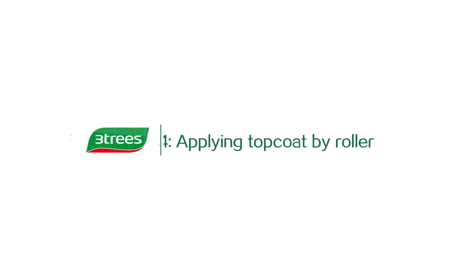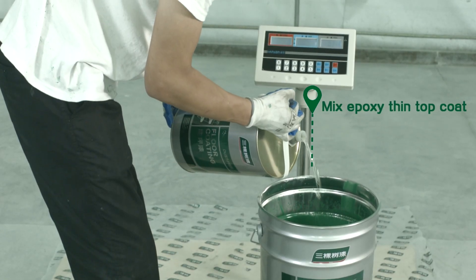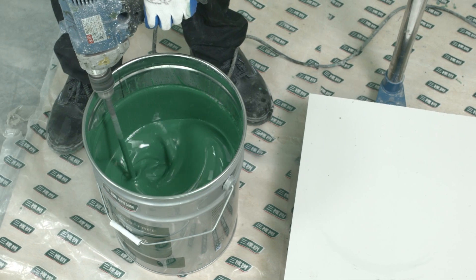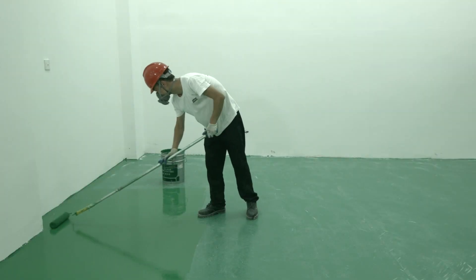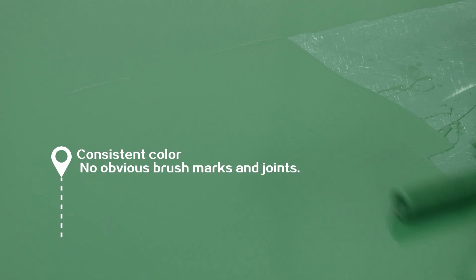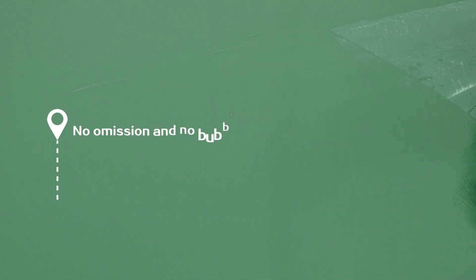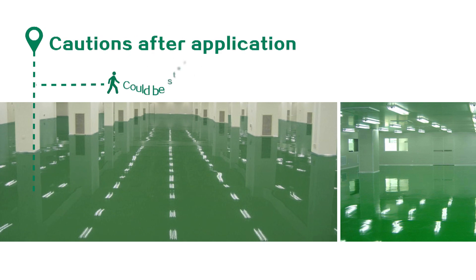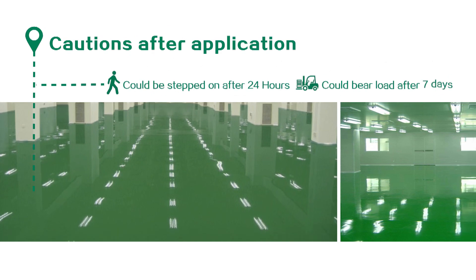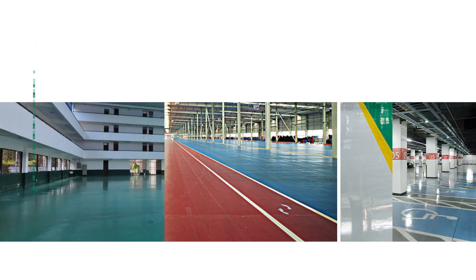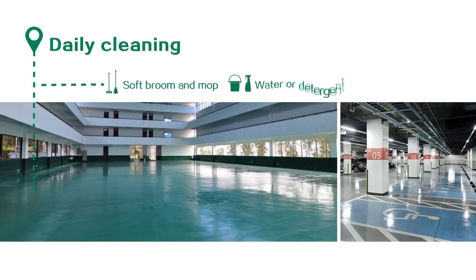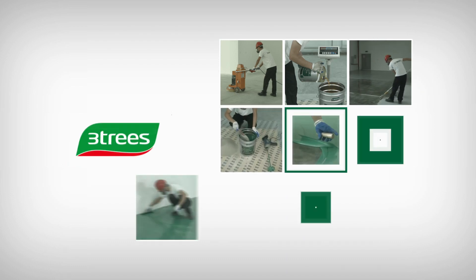Step 4: Apply top coat by roller. Step 5: Mix epoxy thin top coat. Please mind to brush the corners. Apply epoxy thin top coat by roller for one to two times. Make sure the color is consistent and no obvious brush marks and joints. No omission and no bubbles. Please note that the coating could be stepped on after 24 hours, could bear load after 7 days, when dried under standard temperature and humidity. Daily cleaning with a soft broom and a soft mop. Mopping with water or detergent. The above content is the application system of the epoxy mortar floor coating.